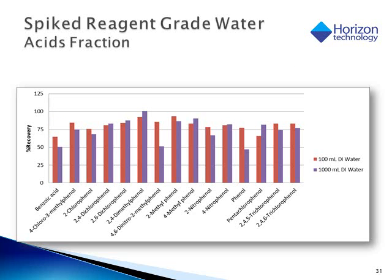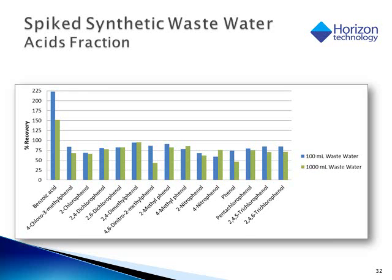Shown are the recoveries for acids in reagent water and synthetic wastewater spiked with the test mix. The 100-milliliter and 1-liter sample recoveries are shown side-by-side with good recoveries overall. In the synthetic wastewater, benzoic acid recoveries were found to be high. Benzoic acid recoveries are GC-MS dependent and generally not a reflection of the SPE process. The best approach to analyze these acids is through esterification prior to analysis.